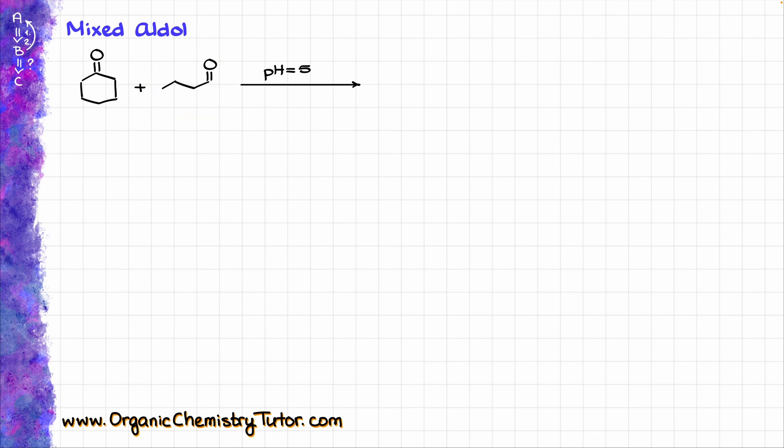However, if I do this reaction not as a regular mixed aldol reaction, but rather via the Stork enamine synthesis by adding a secondary amine and then adding the acidic workup at the end, then I'm going to have something interesting happening here. Since aldehyde is significantly more electrophilic than ketone, that guy is going to react with my amine first, giving me the following enamine. Now that enamine is a nucleophile, while my ketone is going to be the electrophile.